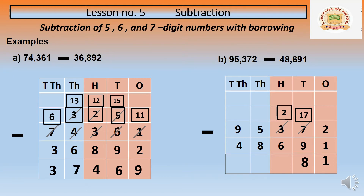Now in the hundreds place: can you minus 6 from 2? No. So we borrow from the thousands place. The 5 thousands becomes 4 thousands, giving 1 thousand to the hundreds. The hundreds become 1200. Simplifying: 12 minus 6 equals 6.